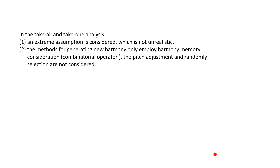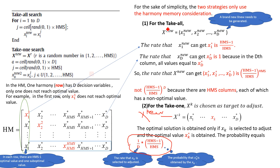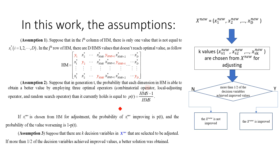In the take-all and take-one analysis, an extreme assumption is considered, which is unrealistic. The methods for generating new harmony only involve harmony memory consideration; pitch adjustment and random selection are not considered. Furthermore, the rate for take-all is not correct in the original paper. So in this work, we re-analyze this problem.